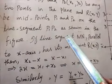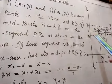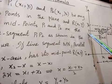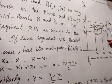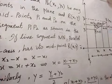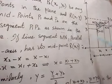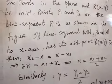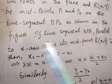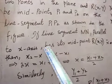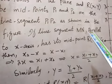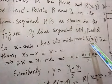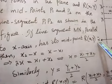If line segment m-n — this is the line m-n, where this is point m and this is point n — is parallel to the x-axis, then it has its midpoint R with coordinates x and y.